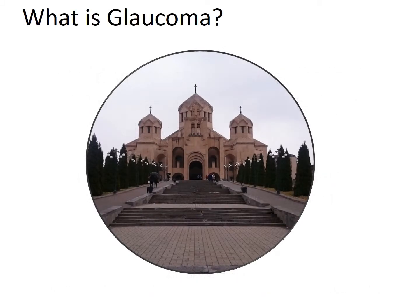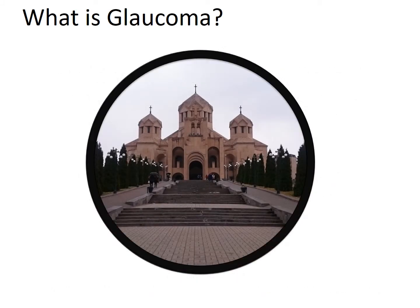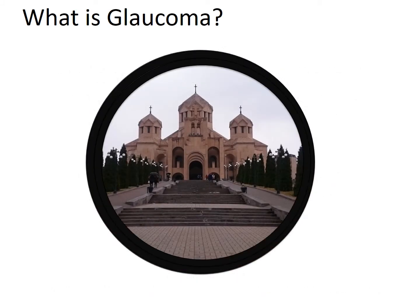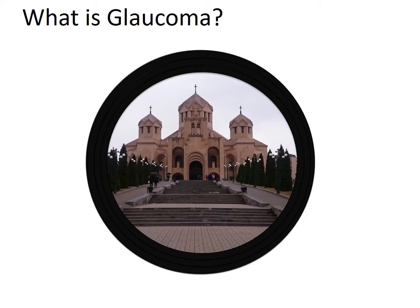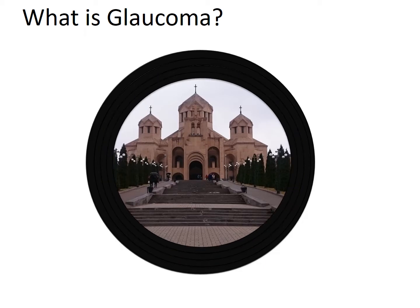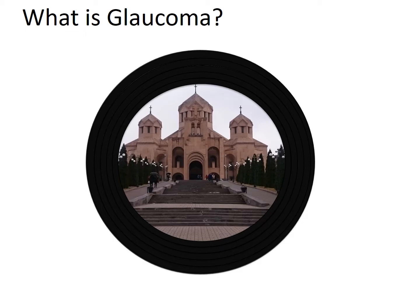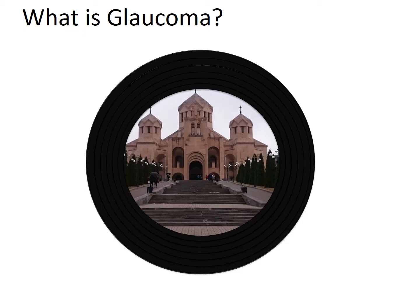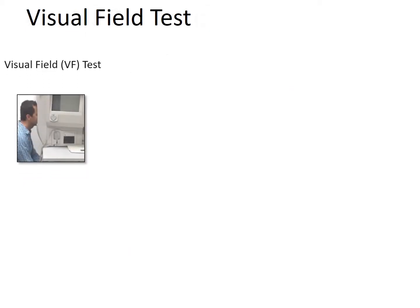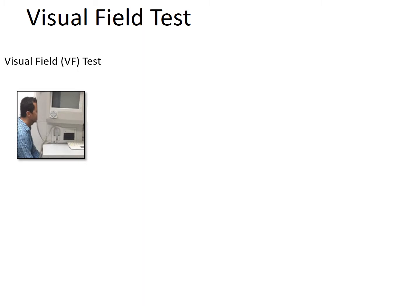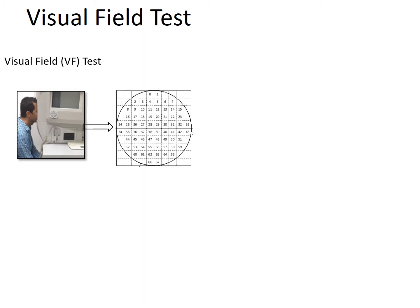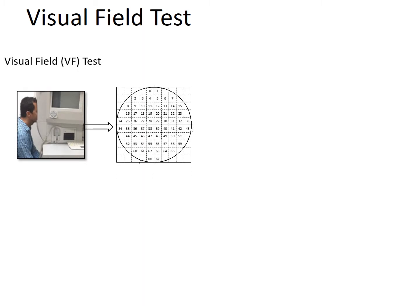Glaucoma is an eye disease that damages the optic nerve and manifests both in structure, as in the optic nerve, and in function, as in the visual field of the eye. Glaucoma gradually shrinks the peripheral vision. The visual field test is used routinely to assess glaucoma, which measures the sensitivity of the retina to tiny lights.